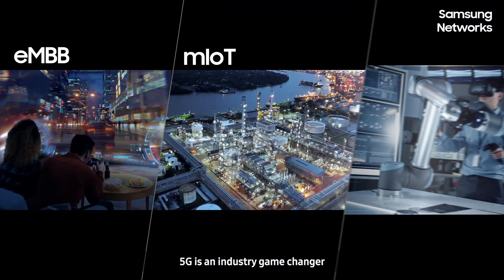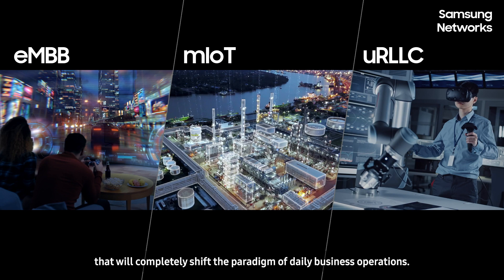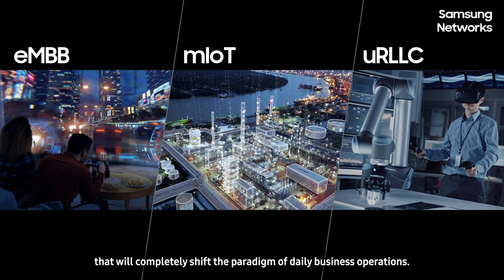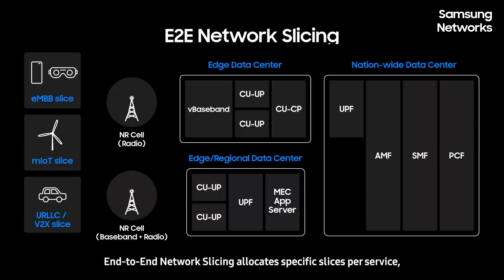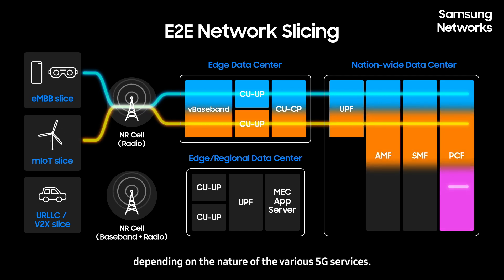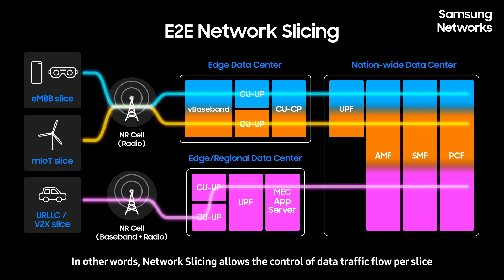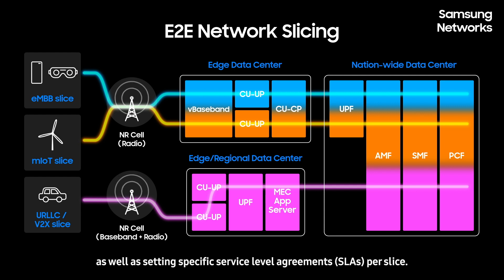5G is an industry game-changer that will completely shift the paradigm of daily business operations. End-to-end network slicing allocates specific slices per service depending on the nature of the various 5G services. In other words, network slicing allows the control of data traffic flow per slice as well as setting specific service level agreements per slice.